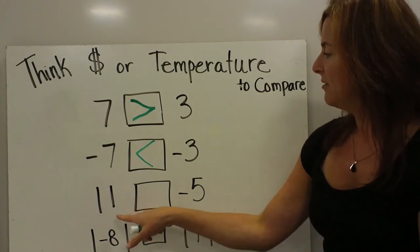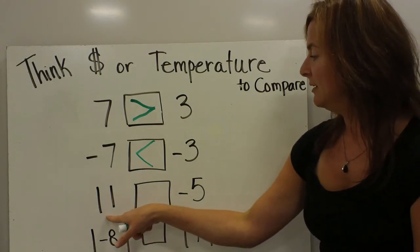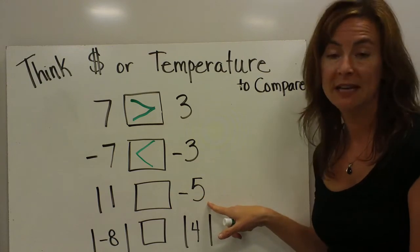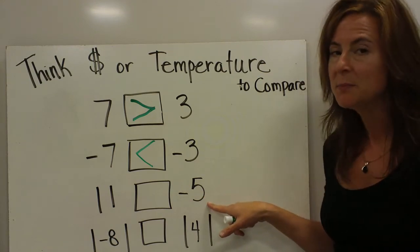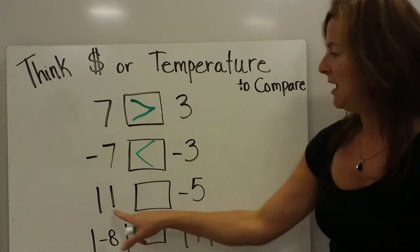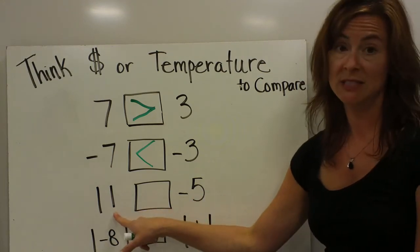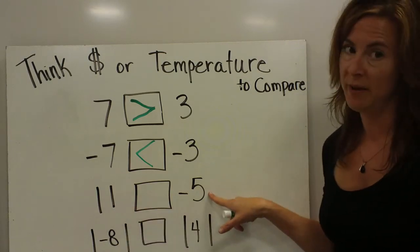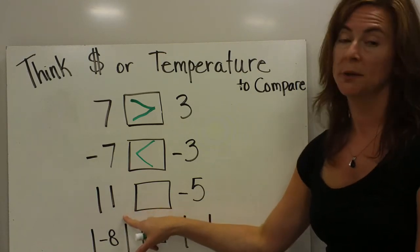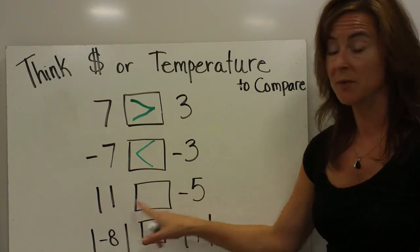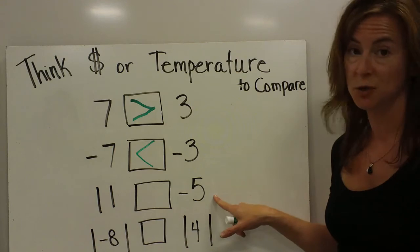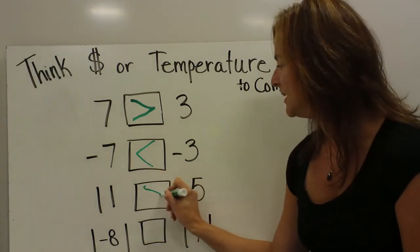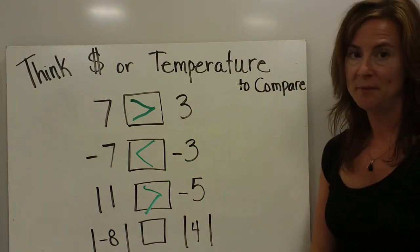Here we have 11 compared to negative 5. That one's pretty easy — I'd rather have 11 dollars in my bank account than owe the bank 5, and 11 degrees would be much warmer than 5 degrees below zero. So 11 is greater than negative 5.